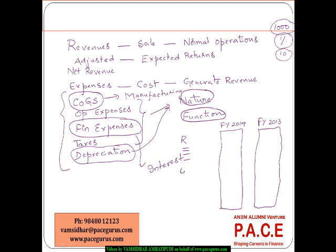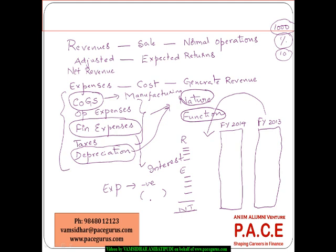The revenues with different subheadings and expenses with different subheadings, and finally the net income, must be presented for both 2014 and 2013. Either the latest year first and earliest second, or the earliest year first and latest year next — both are acceptable. For expenses, people generally show them as negative numbers or in parentheses — any presentation is acceptable as long as expenses are subtracted from revenues to arrive at the income.